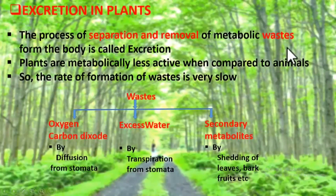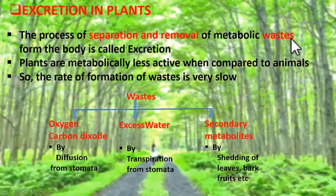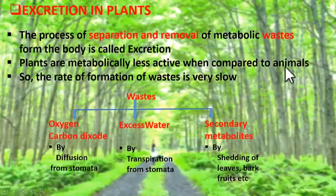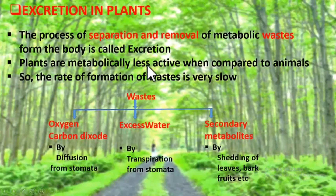We animals require a lot of energy because we perform more complex activities compared to plants — for instance, locomotion. Animals move from one place to another in search of food, shelter, mate, etc. But plants are fixed to one single place. So there is a lot of energy demand in animals, making them metabolically active. Because plants are less active, the rate of formation of waste is also slow in plants.